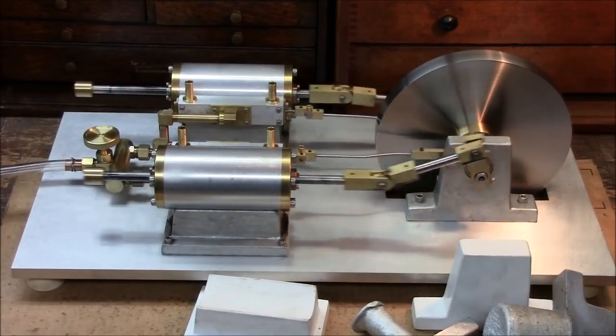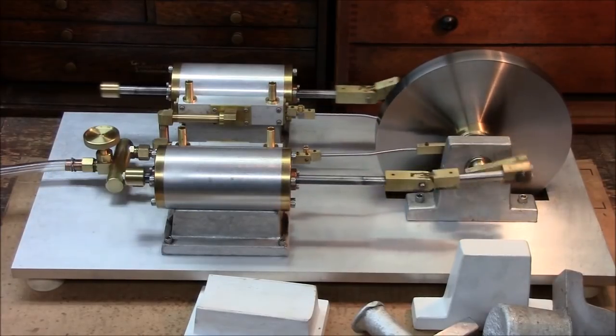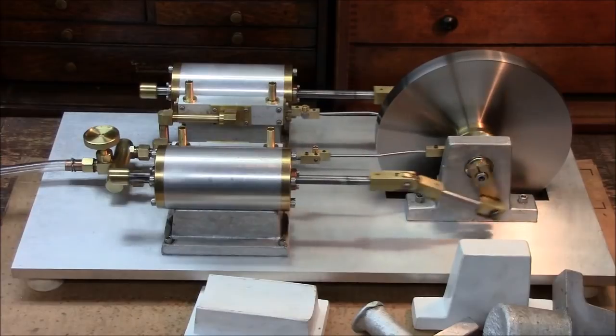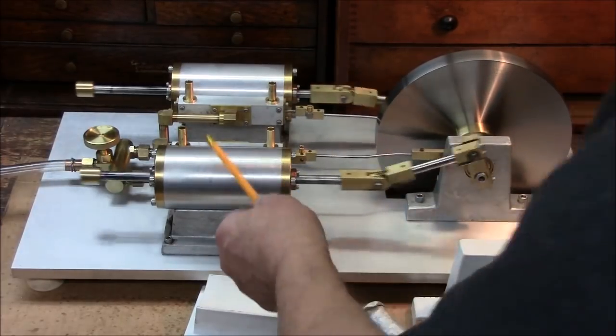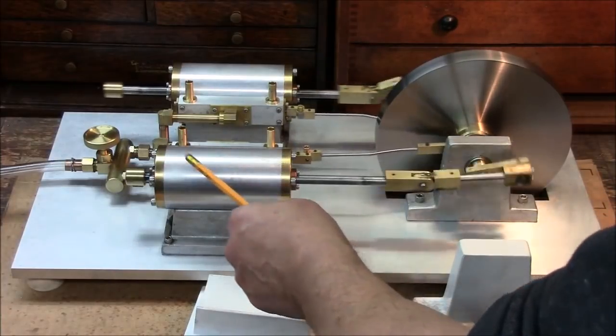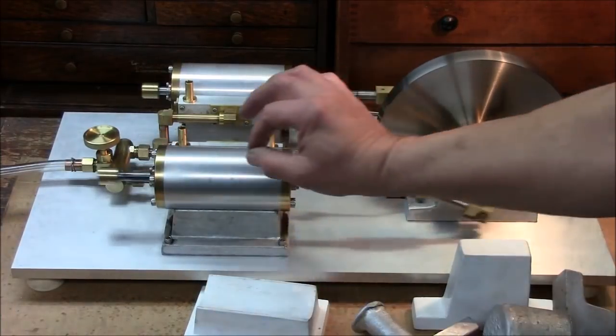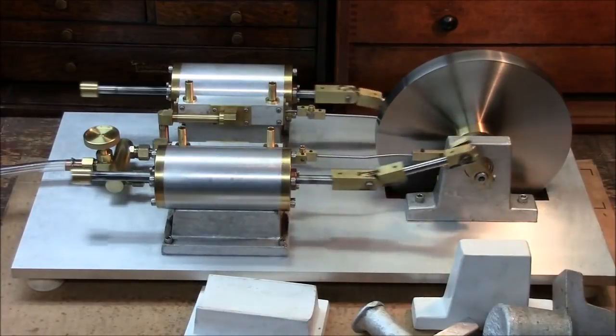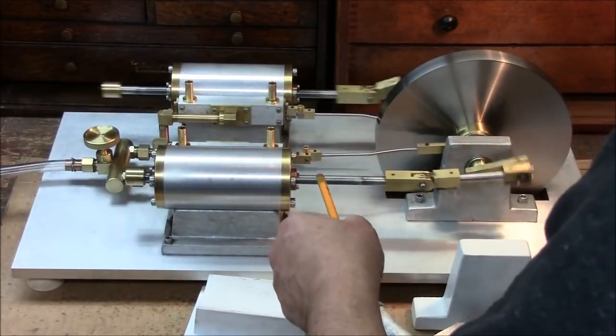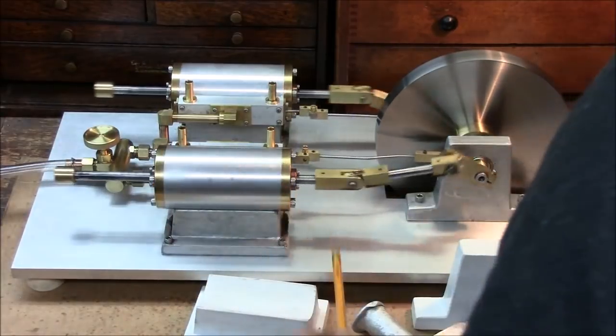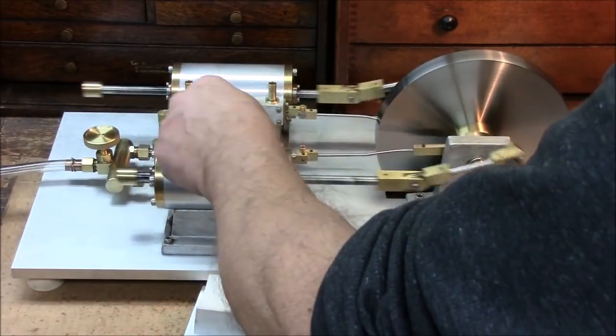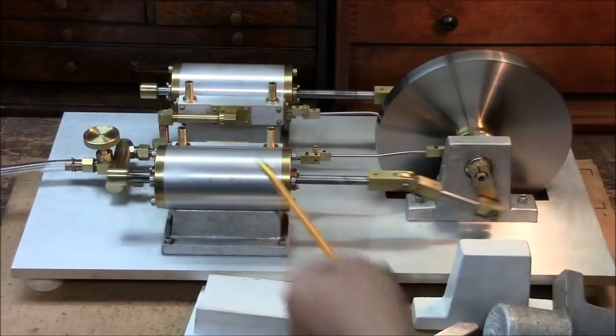Today I want to share with you my newest stationary engine. Now, I teased this project in my last engine video by showing the cylinders. The bore is one and three quarter inches, and the stroke is four inches. It's a double acting engine in that the piston is pushed both ways by reciprocating entrance of air, in this case compressed air.